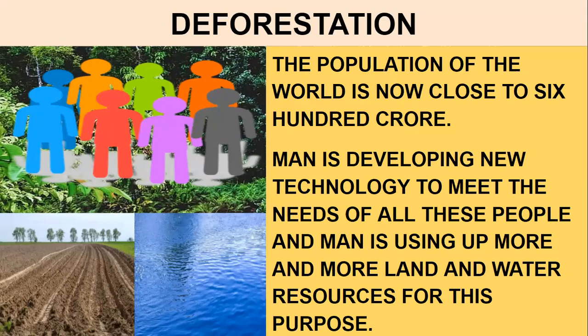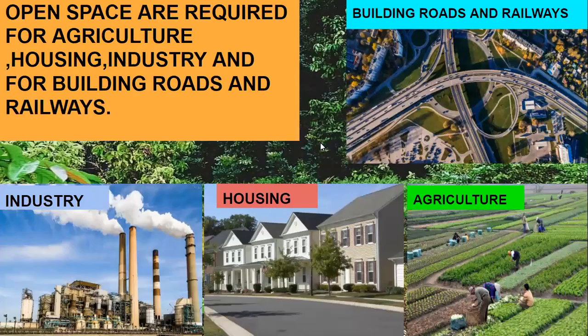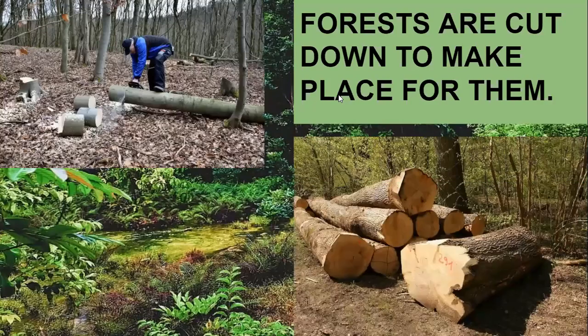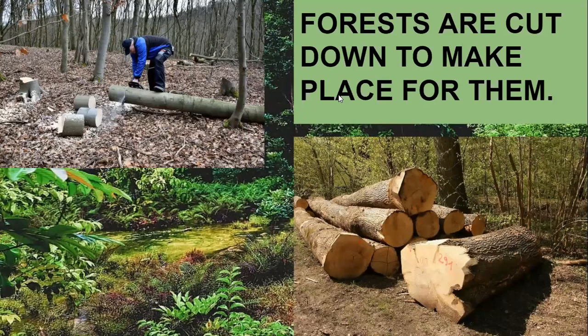Why is there deforestation? Because people are cutting down the trees. The population of the world is now close to 600 crores, and man is developing new technology to meet the needs of all these people. Man is using up more and more land and water. Open space is required for building roads and railways, for agriculture, for housing, and for industries. So forests are being cut down for industry, for building roads and railways, and to make place for them.